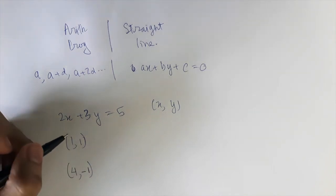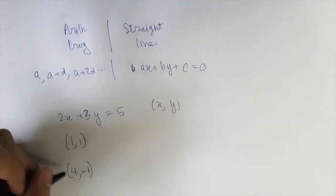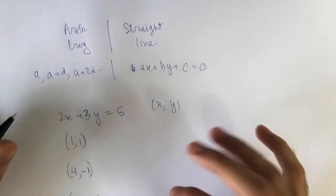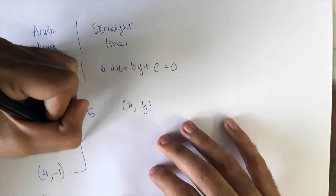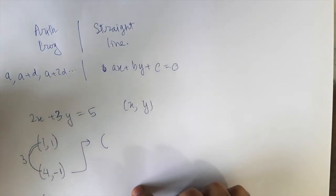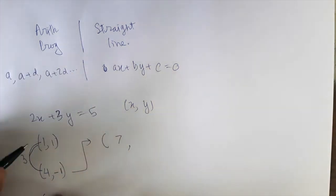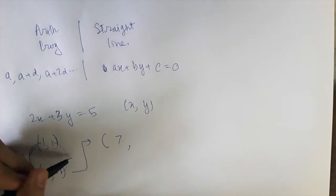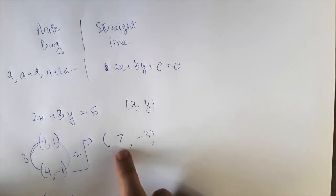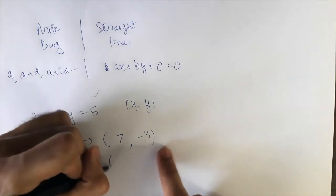Let's check: 2×4 = 8 and 3×(-1) = -3, so 8 - 3 = 5. Yes, it satisfies. Now here's where the arithmetic progression comes in. Going from x=1 to x=4, I added 3. So for the next solution I'll add 3 again to get x=7. Going from y=1 to y=-1, I subtracted 2, so I'll subtract 2 again. Let's check: 2×7 = 14, 3×3 = 9, and 14 - 9 = 5. Pretty nice!